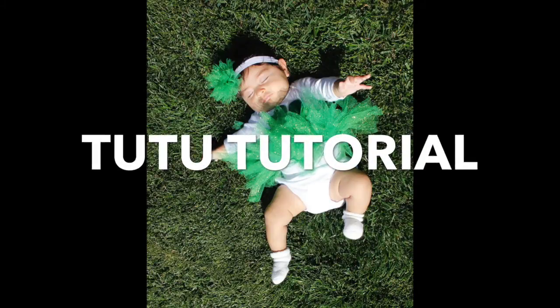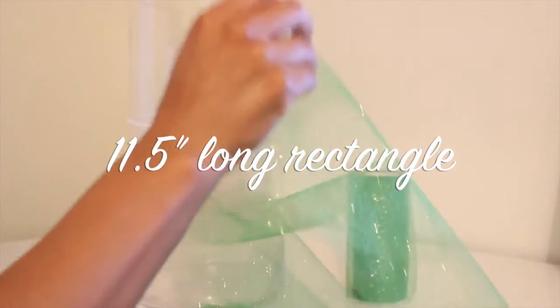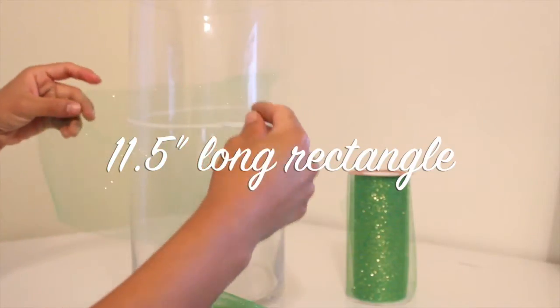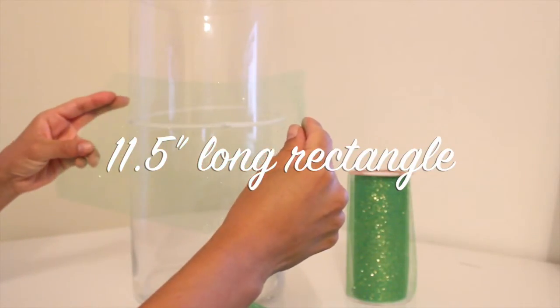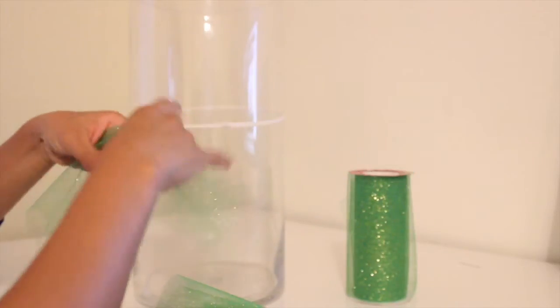This is my tutu tutorial. I purchased some glittered green tulle at Walmart. Now the glitter makes this tulle a lot stiffer than regular tulle. First I cut out a rectangle 11 and a half inches long. This tutu is for a newborn.